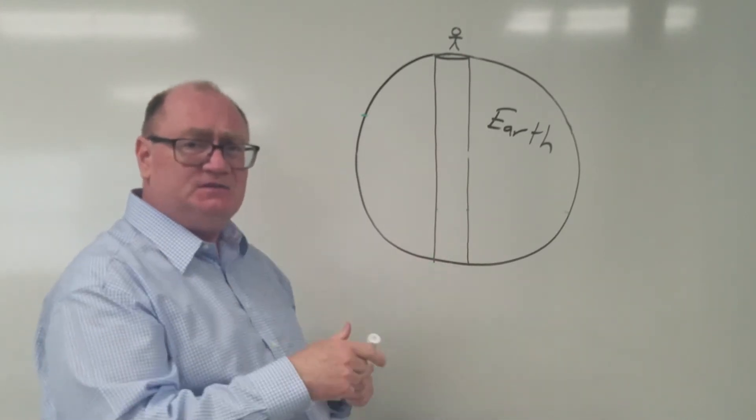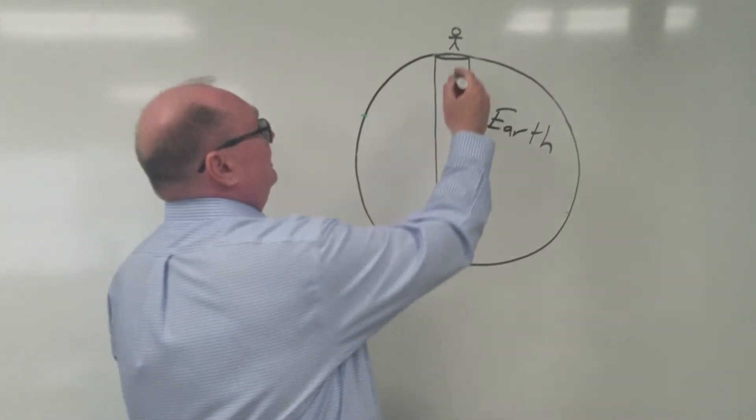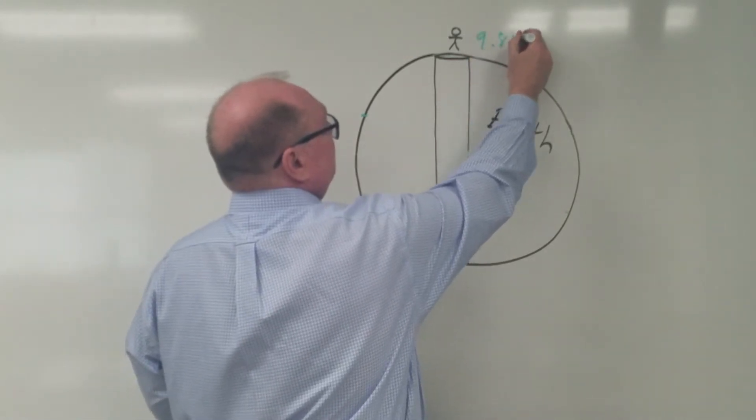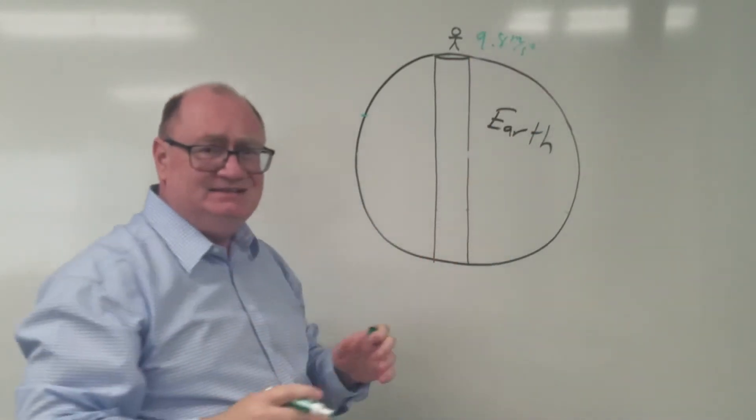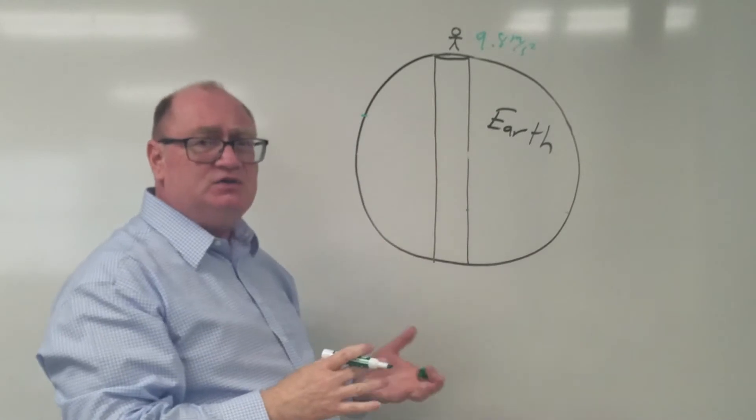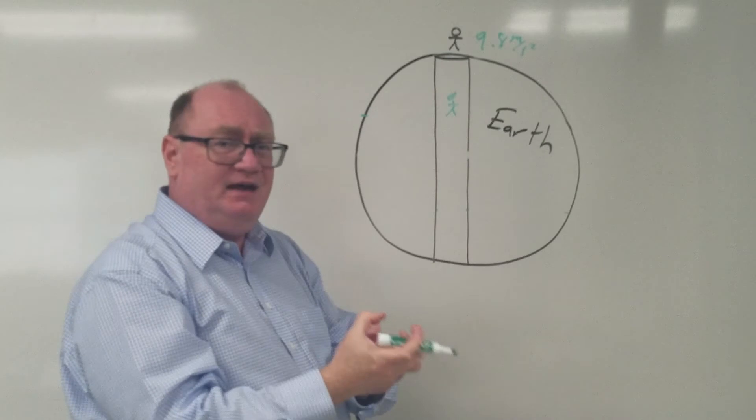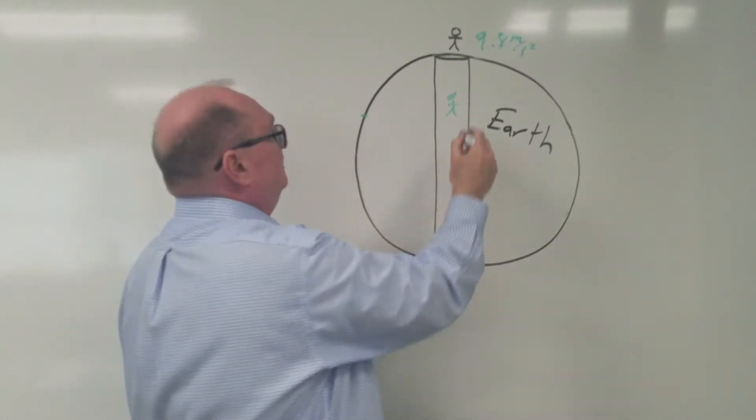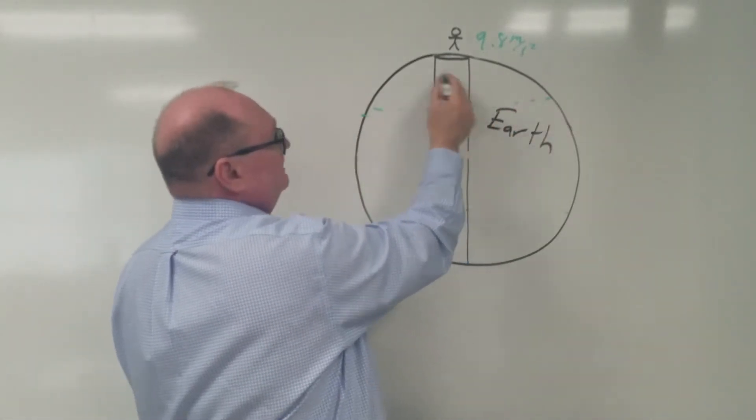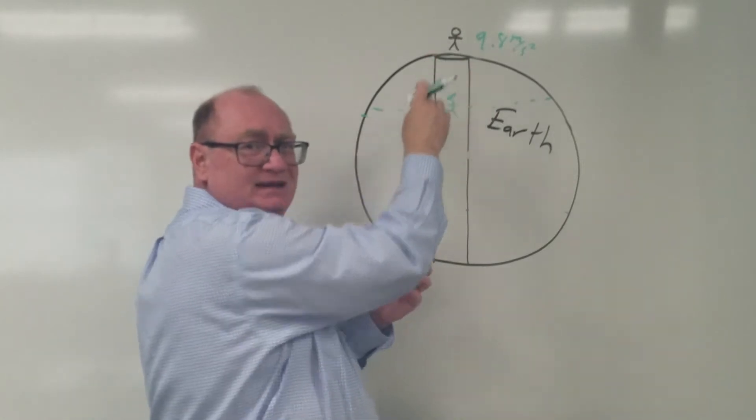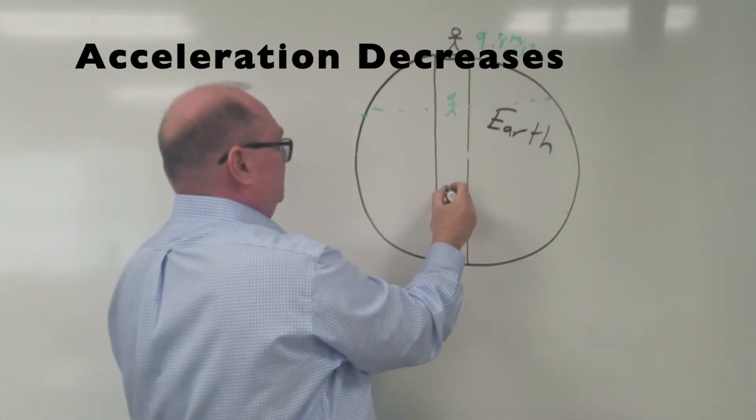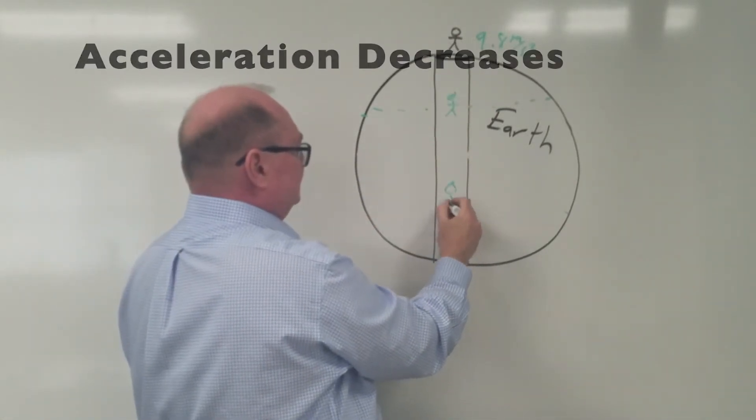How long would it take you to fall that distance all the way through the center of the Earth? Well, at the surface of the Earth, gravity is 9.8 meters per second squared. But that's not true the entire trip. As you fall, what's pulling you down is the amount of Earth below you. And so this part up above you actually pulls back up and slows you down until you pass the center of the Earth.